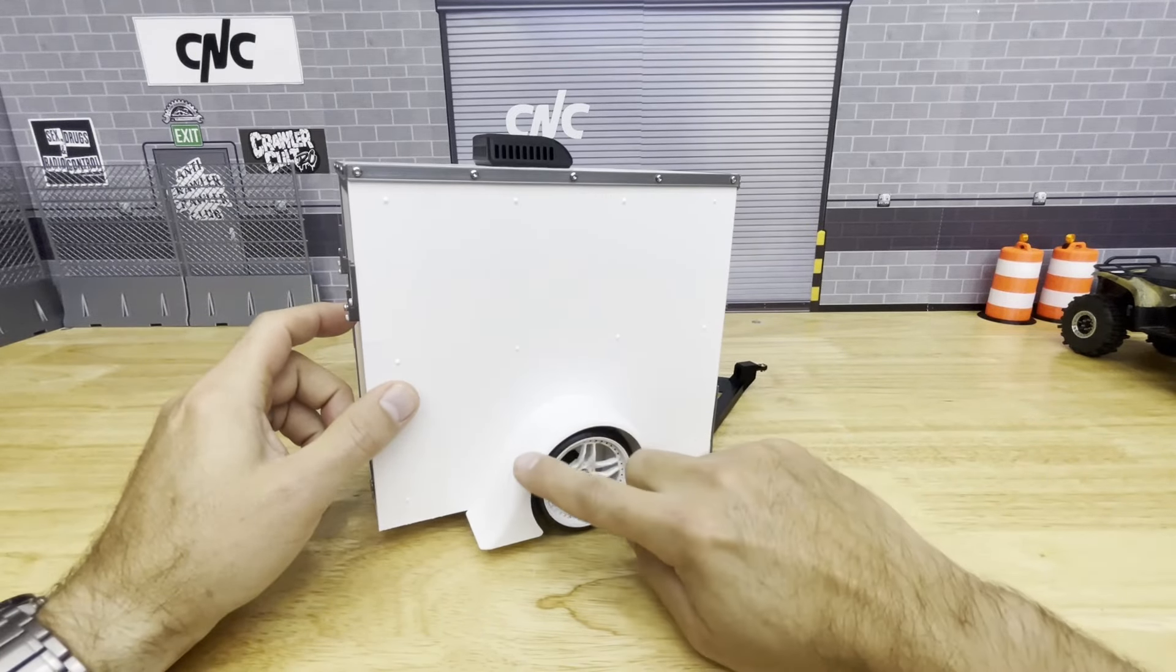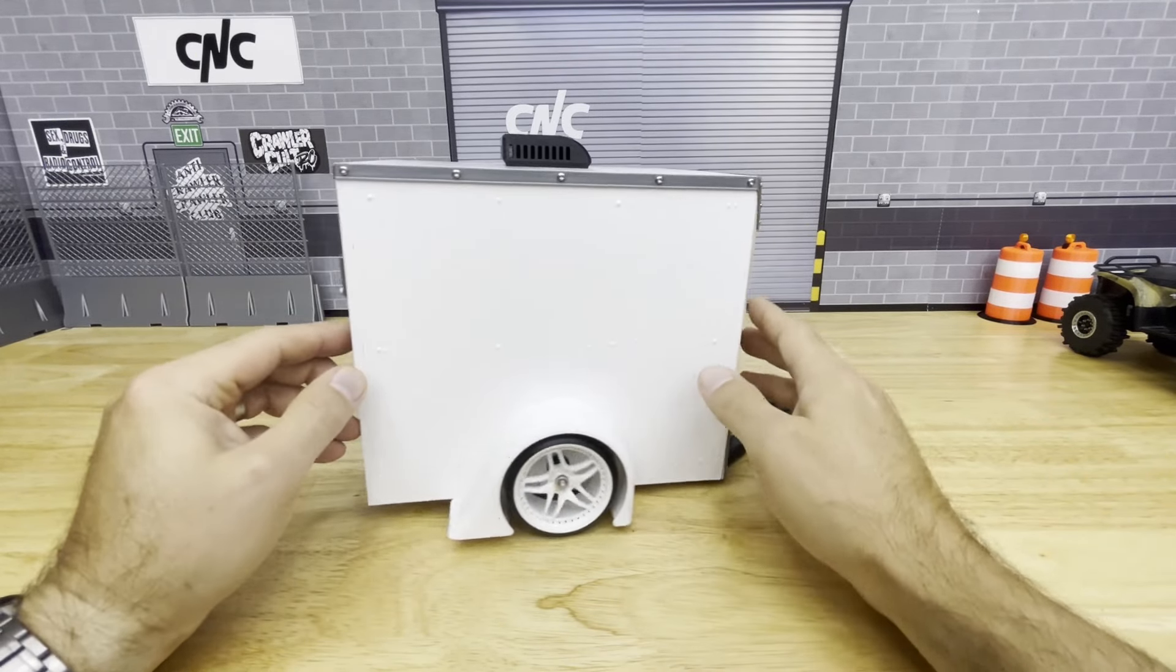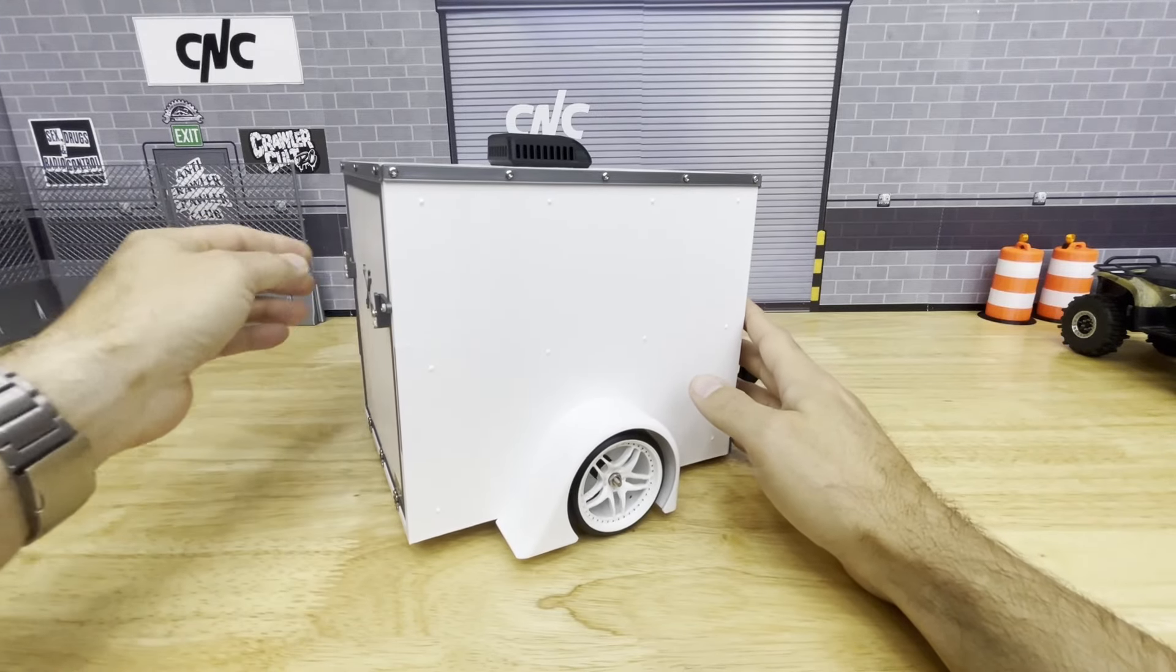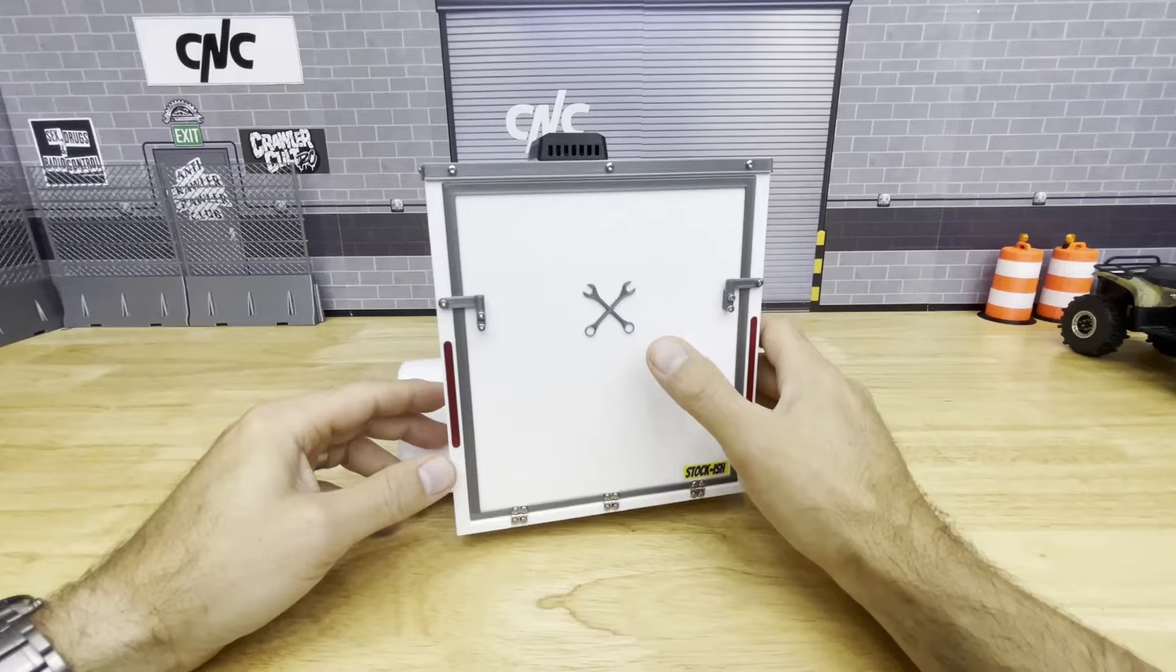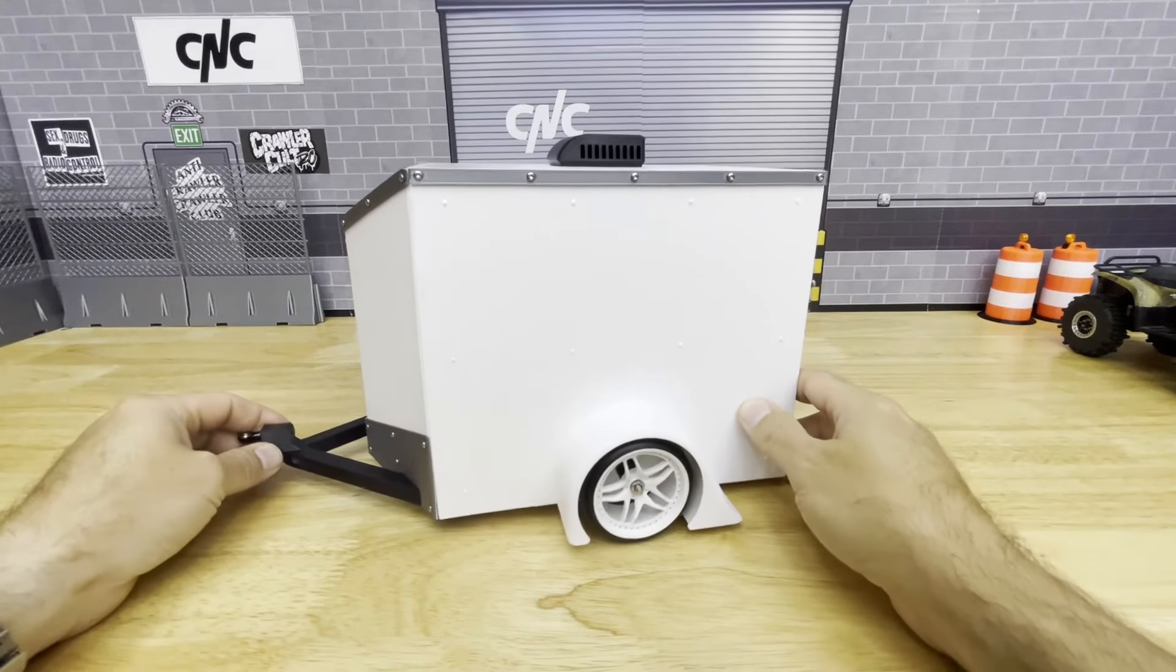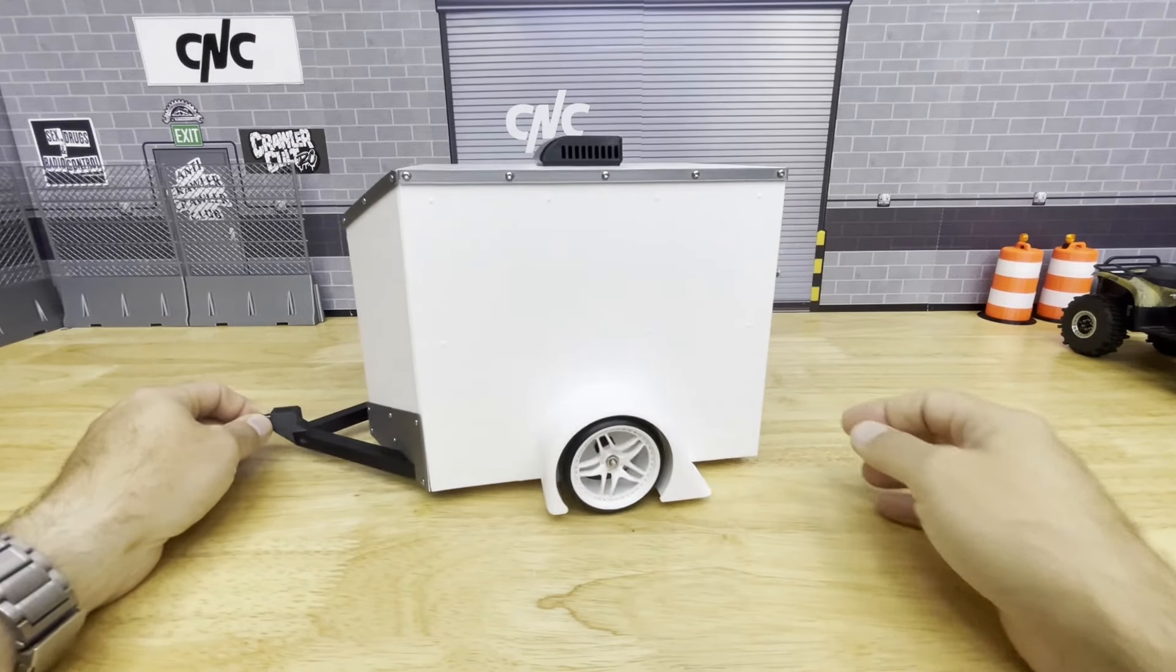You can also see the lowered style fender on this one, kind of old school versus new school, and the crossed wrenches design. All right, so that's the slammed trailer. Let's go to the next one.